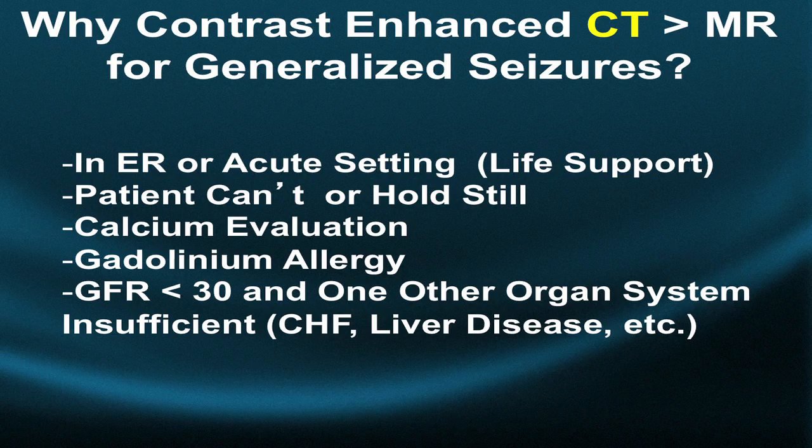Why would I prefer contrast-enhanced CT over MRI for generalized seizures? If the patient comes in through the emergency room where CT is more available and the patient can get on and off the table more quickly, or in the acute setting where the patient has life support devices, CT is easier and more practical. Also for patients who can't cooperate or hold still, or when you suspect a calcific lesion or need to evaluate calcium in the brain.